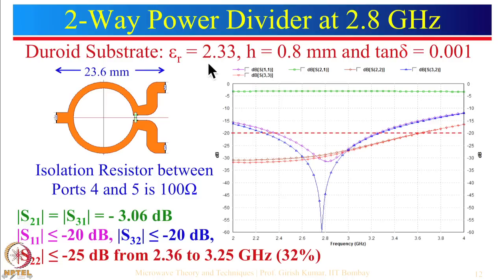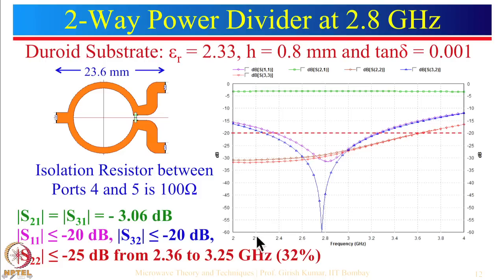Because epsilon_r is reduced, the width of the 50 ohm line increases compared to when epsilon_r = 4.4. The isolation resistance is 100 ohm as before, and we use the circular ring layout. The design frequency is around 2.8 GHz. S21 and S31 = minus 3.06 dB.